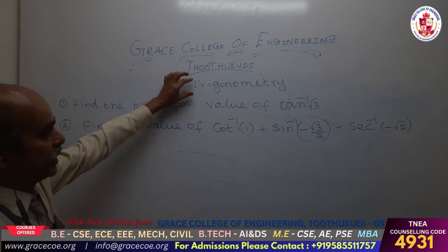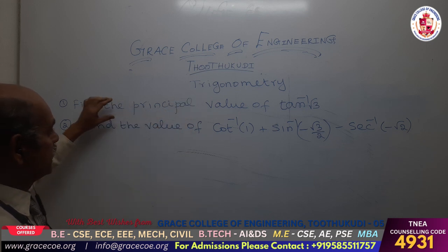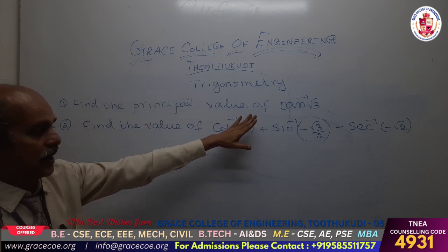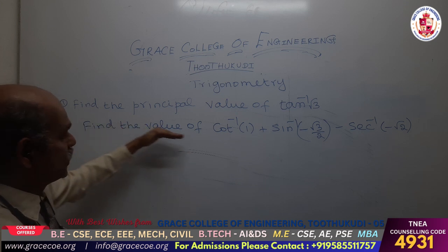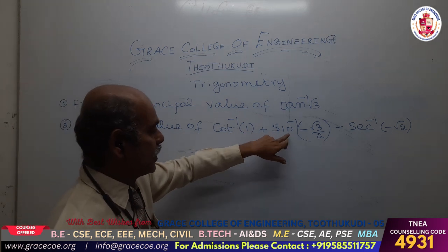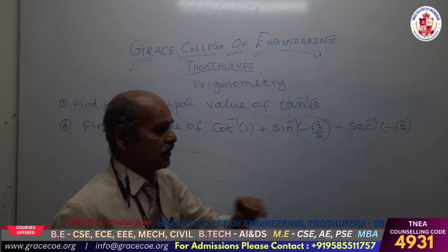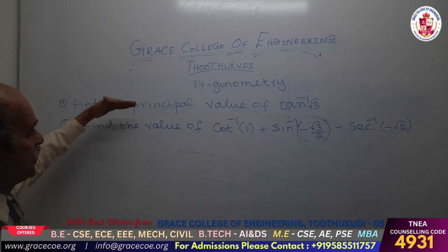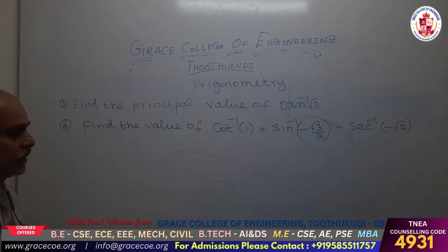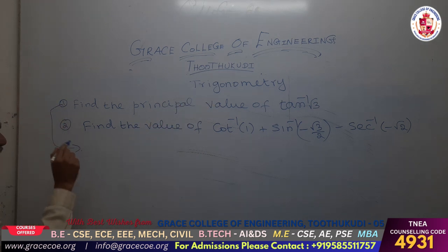In trigonometry, we are going to first find the principal value of tan inverse of root 3. Then we are going to find cot inverse 1 plus sin inverse of minus root 3 by 2 minus secant inverse of minus root 2. First we are going to do the problem tan inverse root 3 — that is the solution for the first problem.